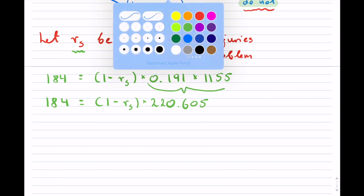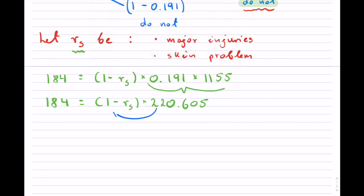And now indeed, now I can go ahead and bring this inside of the brackets. Don't forget, you have to multiply it by both terms. So I'm going to get 220.605 minus 220.605 RS, and now we will solve.